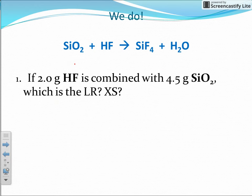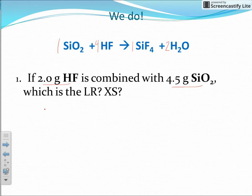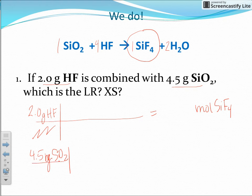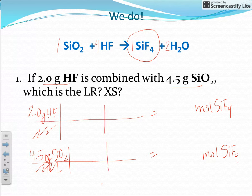Now let's look at a chemistry example. We have a chemical equation — balance it with coefficients 1, 4, 1, 2. We have 2.0 grams of HF and 4.5 grams of SiO₂, one of which is the limiting reactant. Start with your givens. Since there are two products, we always go to moles of the first product written, which is SiF₄. Convert both reactants to moles of SiF₄. This gram-to-mole conversion is a two-step process — pause the video here and work it out.